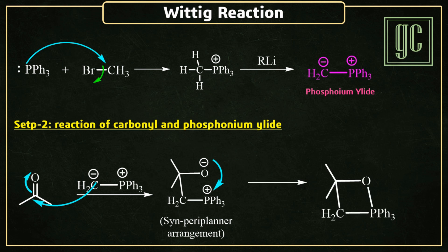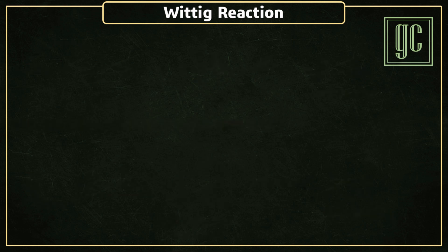Now, due to ring strain, this cyclic structure breaks and rearrangement of sigma electrons takes place. The final product alkene is formed.